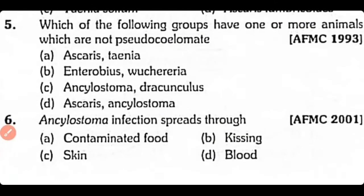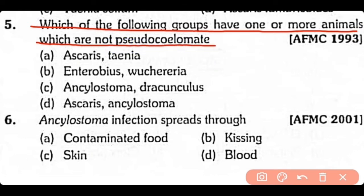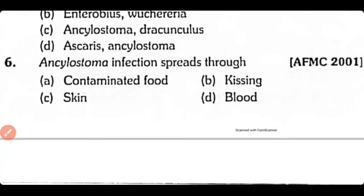Question 5: Which of the following groups has one or more animals that are not pseudocoelomate? The example given is Ascaris and Taenia. The correct answer is that Ascaris is acoelomate while Taenia is also acoelomate.